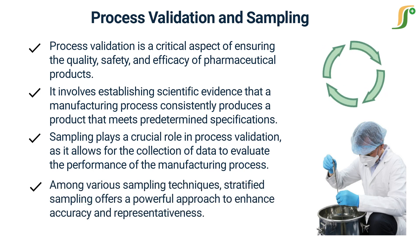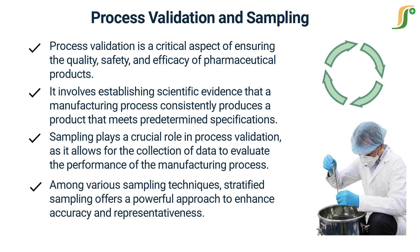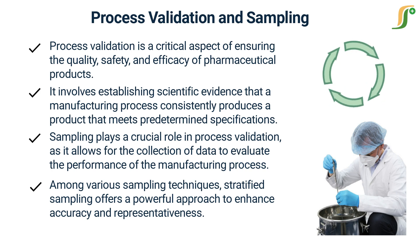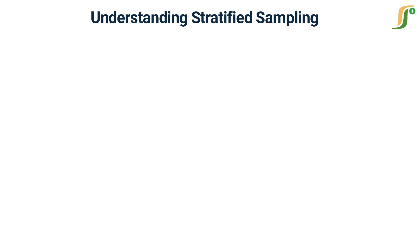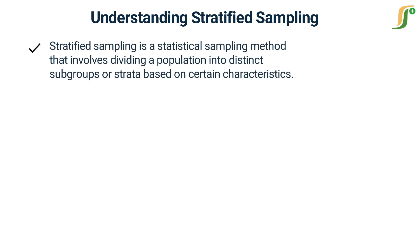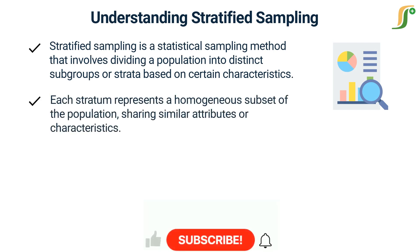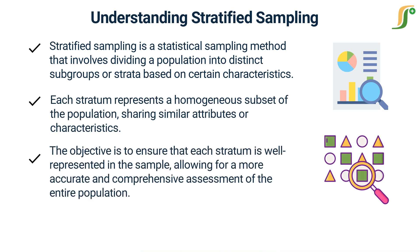Among various sampling techniques, stratified sampling offers a powerful approach to enhance accuracy and representativeness. Stratified sampling is a statistical sampling method that involves dividing a population into distinct subgroups or strata based on certain characteristics. Each stratum represents a homogeneous subset of the population sharing similar attributes or characteristics. The objective is to ensure that each stratum is well represented in the sample, allowing for a more accurate and comprehensive assessment of the entire population.